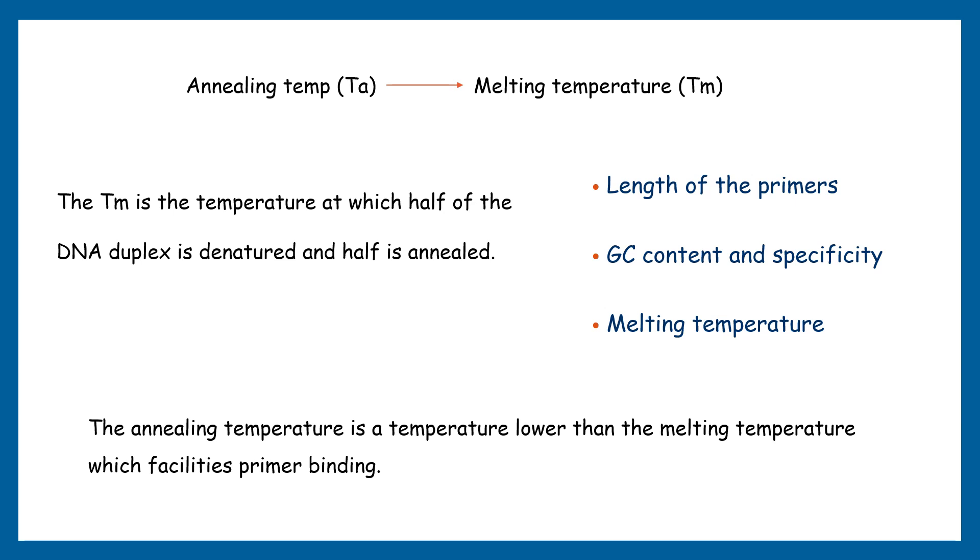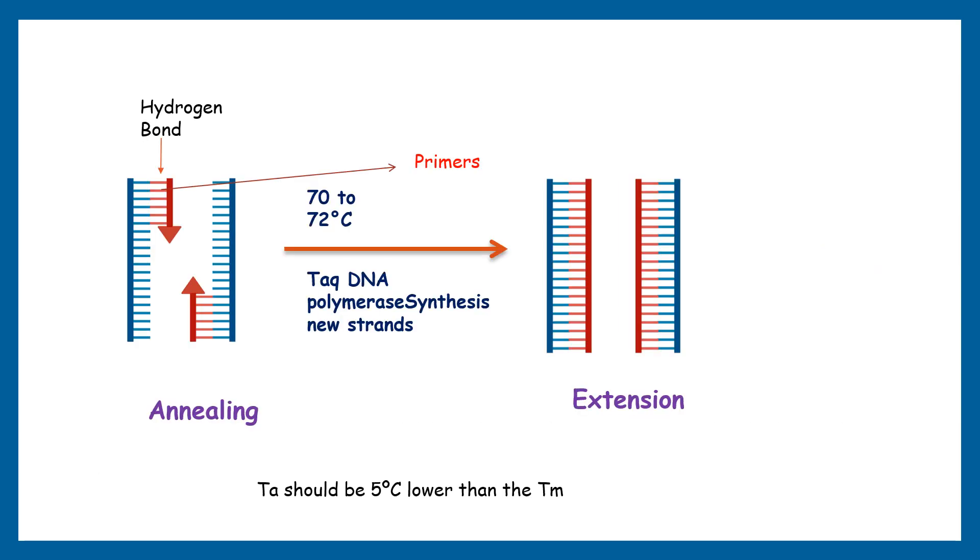Now you may wonder what exactly happens during annealing. It's an amplification step that allows primer-template binding to the complementary location. That means if the annealing temperature is calculated accurately, it will only bind to its target location.